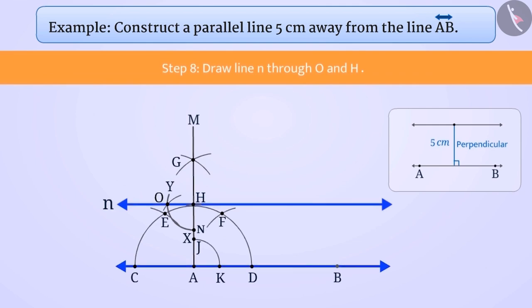Here, we have obtained N parallel to AB which is at a distance of 5 cm from AB, which means there is a distance of 5 cm between both parallel lines.